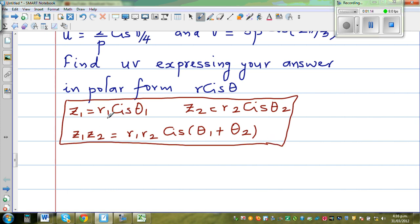...you multiply the absolute value and you add the angles. That's the simple rule. So here you have got u, u is 2 by p, 2 over p.